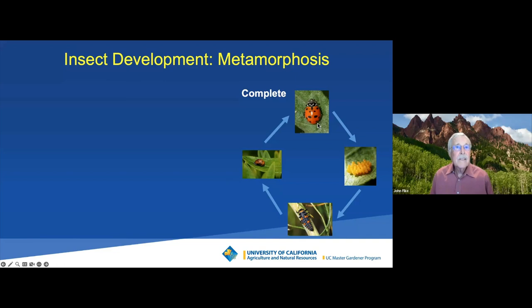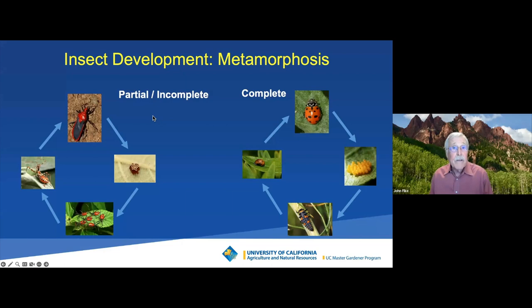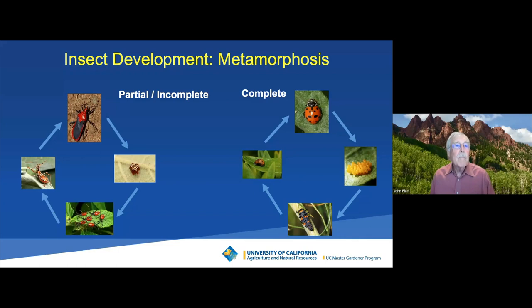Another way they do it is called partial or incomplete metamorphosis. The female lays her eggs, and this time the eggs hatch into what are called nymphs — instar nymphs. Depending on the species, they could have two, three, five, or six stages of instar development. Each time they go from one stage to the next, they shed their outer skeleton. They become more and more like the adult until the final instar sheds its exoskeleton and looks just like mom and dad.